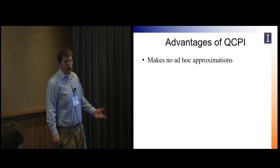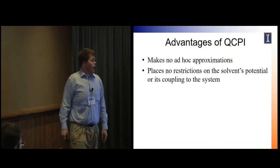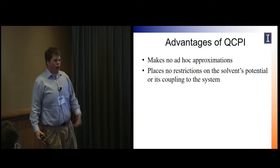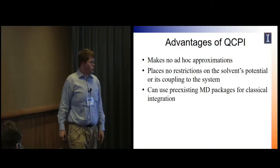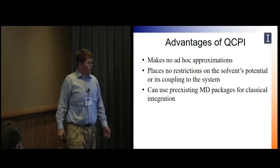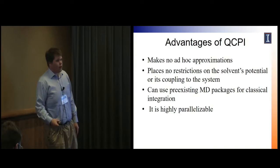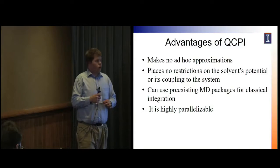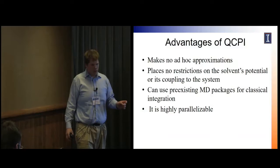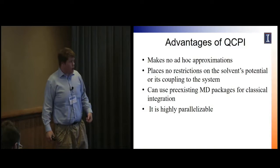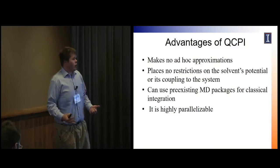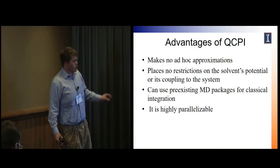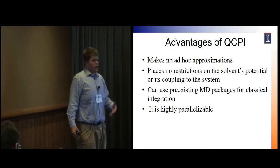The key advantages of QCPI are that there are no ad hoc approximations and no restrictions on the solvent potential — you can use harmonic, atomistic, or any toy model. You can use pre-existing packages for the classical integration, and it's highly parallelizable. This is what makes Blue Waters really nice for this, because you can put thousands of initial conditions on different cores and just run them. Additionally, these path sums use a lot of memory, so it's nice to have many thousands of classical trajectories on a core with a lot of memory available.